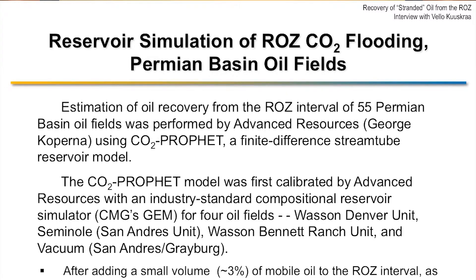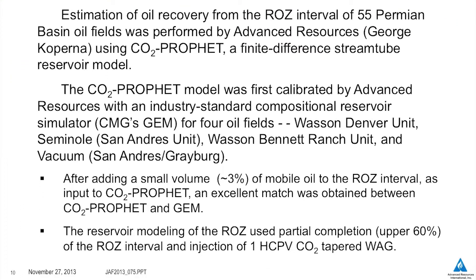You want to tell us about some of the simulations between the CO2 ROZ flooding? We took information on reservoir properties and whatever we could glean from actual performance of residual oil zone floods and began to put that information first into a full-scale reservoir simulator — GEM, a finite difference compositional simulator — and then second into a more simplistic stream tube model. It still is a finite difference model but it runs a lot quicker. We found we could actually replicate the much more sophisticated analysis with the stream tube model, and then applied CO2 PROFIT to the 55 fields in the Permian Basin to look at how much oil we might recover, at what CO2 requirements, and over what period of time.